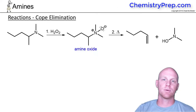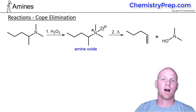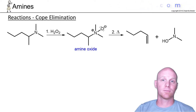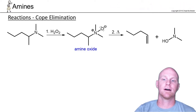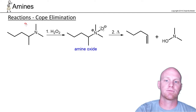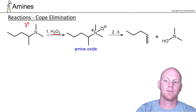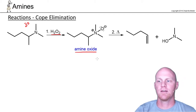The next reaction of amines up for study is the COPE elimination. It is similar to the Hoffman elimination in that we're going to form the less-substituted alkene. In this case, it is specific for tertiary amines, and when you react them with hydrogen peroxide, you get what's called an amine oxide.